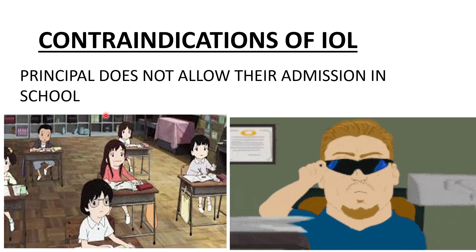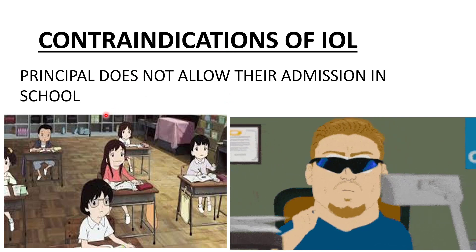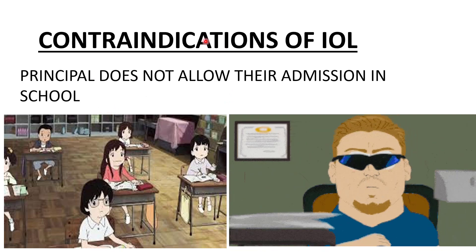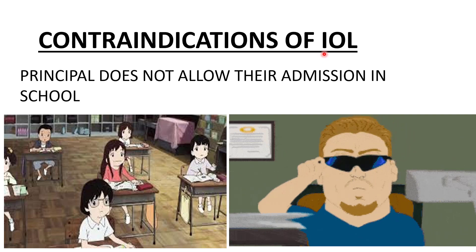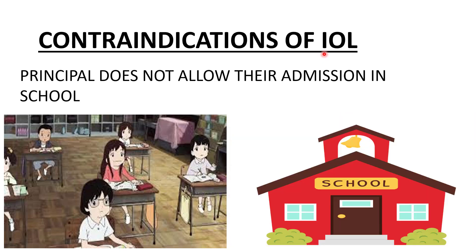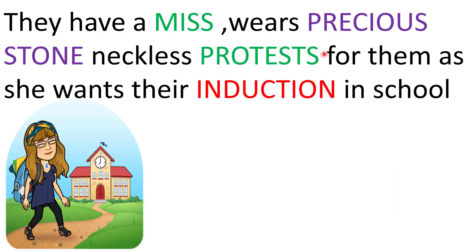The parents want the admission of Oxy and Diana, but the principal does not allow their admission in the school due to some reasons — those will tell you the contraindications of induction of labor. Kindly watch that video; the link is present in the description box. But they have a miss — she wears a precious stone necklace — and she protests for them, as she wants their induction in school.